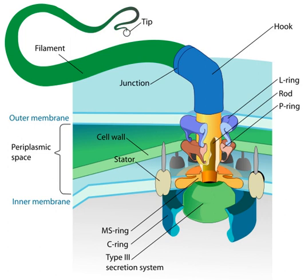During flagellar assembly, components of the flagellum pass through the hollow cores of the basal body and the nascent filament. During assembly, protein components are added at the flagellar tip rather than at the base. In vitro, flagellar filaments assemble spontaneously in a solution containing purified flagellin as the sole protein.